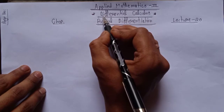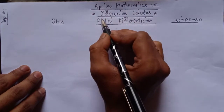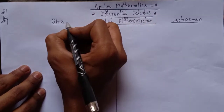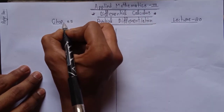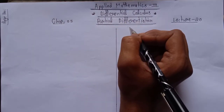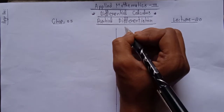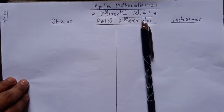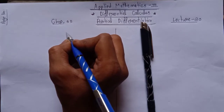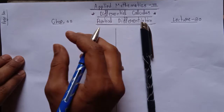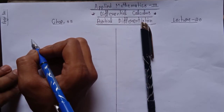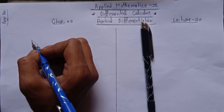Our next topic is differential calculus — specifically partial differentiation, which we can call chapter number 5. Now, before starting partial differentiation, let me remind you of what you studied in the previous semester. You already know what differentiation is and the basic formulas — for example, differentiation of sin x is cos x, and differentiation of cos x is -sin x.